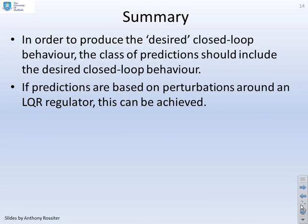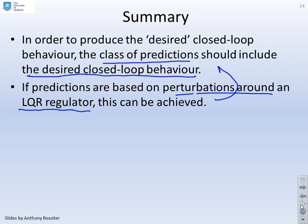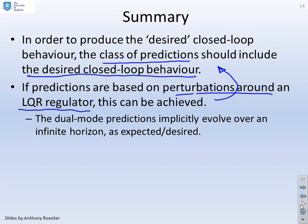A summary. In order to produce the desired closed loop behavior, the class of predictions should include the desired closed loop behavior. If your predictions are based on perturbations around the optimal LQR regulator, then this can be achieved. It's a simple mechanism of achieving what you want. The dual mode predictions implicitly evolve over an infinite horizon, so they only converge asymptotically. That's what you wanted.